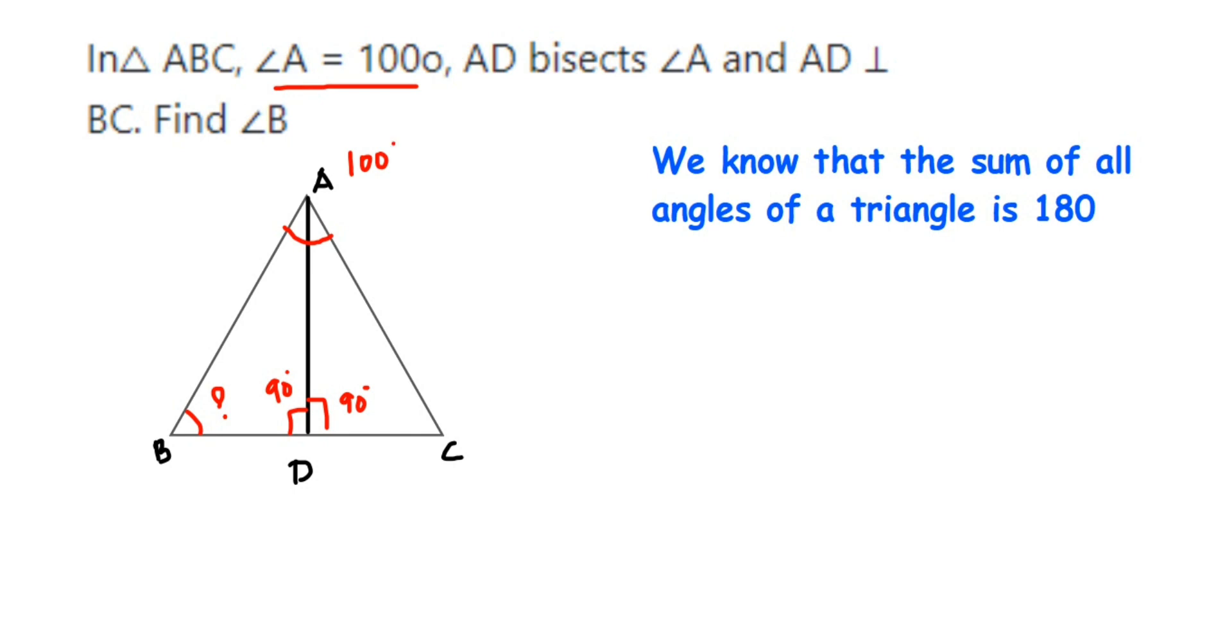given that AD bisects angle A, this angle will be 50 degrees only. This part and this part will be 50 degrees each. Now we have to find angle B, but we know the property of